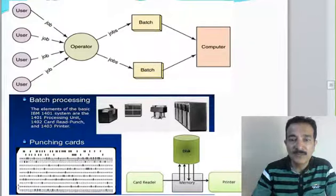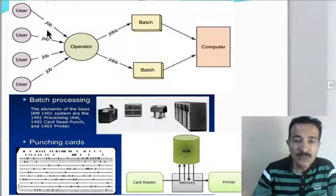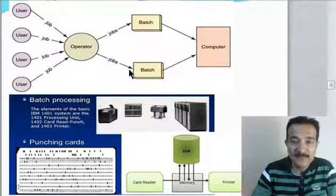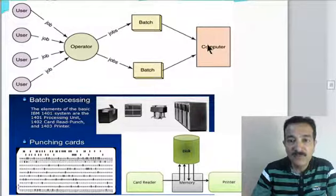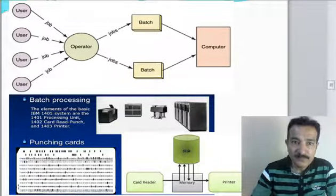Looking at this diagram, you could see there are many users. All the users will give their jobs to an operator. The operator, based on the kind of job that has been given, will segregate them into different batches. All the jobs of the same kind will be given to the computer to execute.